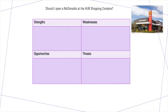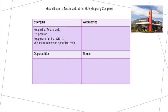So, strengths: speaking as a representative of McDonald's, people like McDonald's, they know it, it's popular and doing well in Australia. Brand recognition is a strength — it's not something that 'would be great if it happened,' it's already happened. People are familiar with it. We have an appealing menu, and people are generally going to come because they know, recognise, and like McDonald's. That's a strength — something that over time has been developed by the business and they've largely got control of.